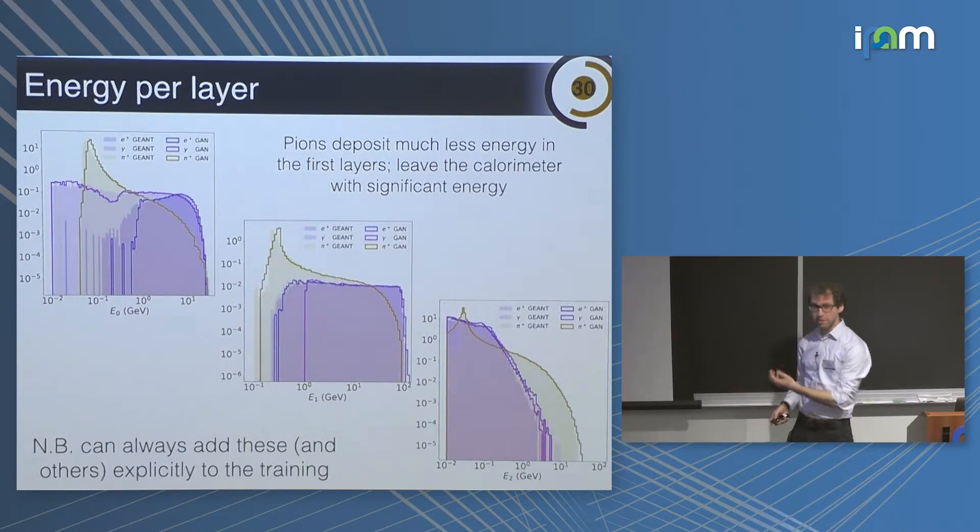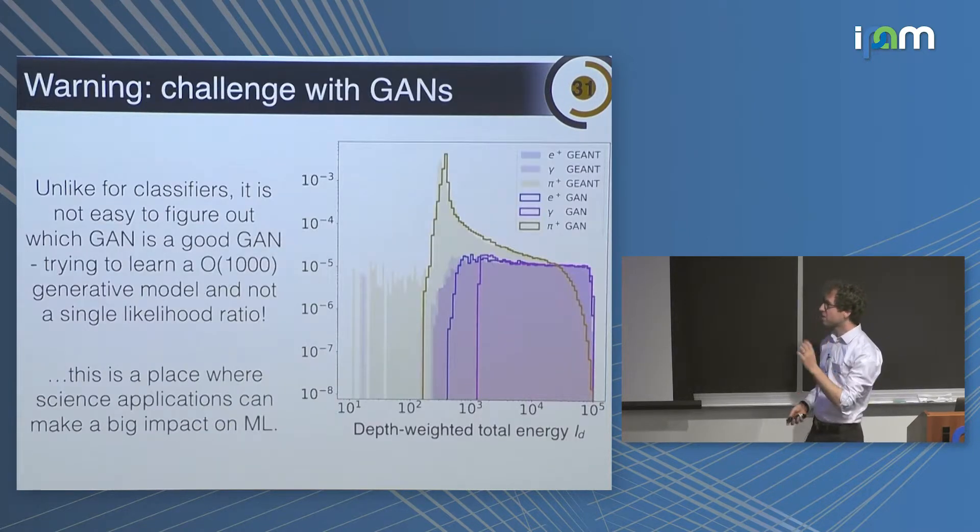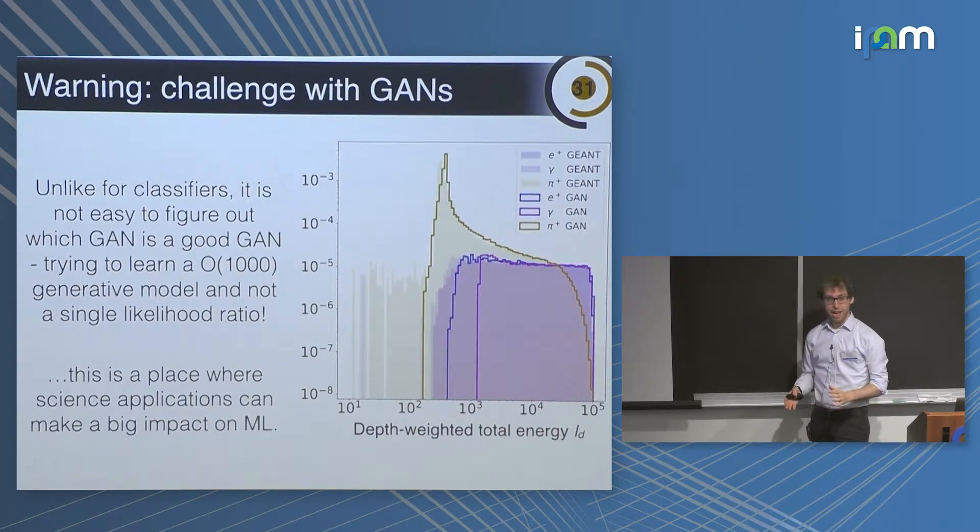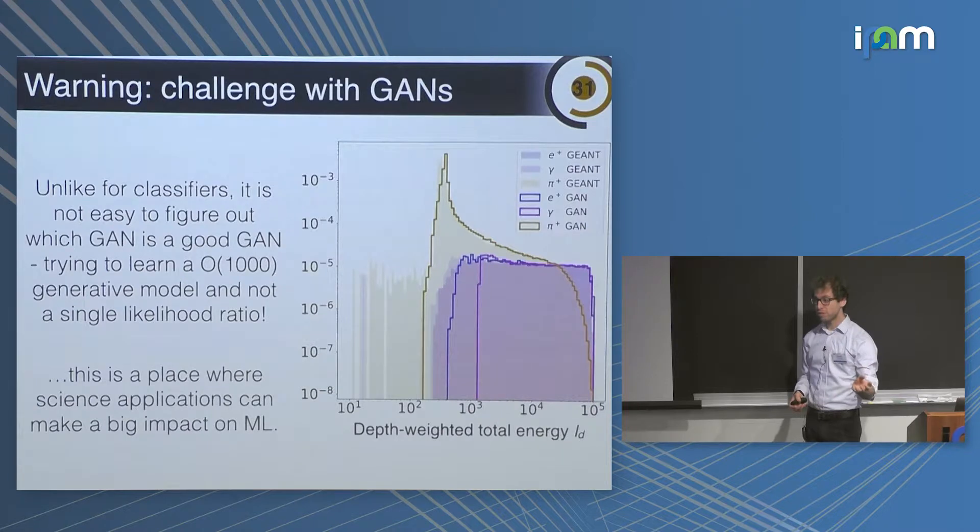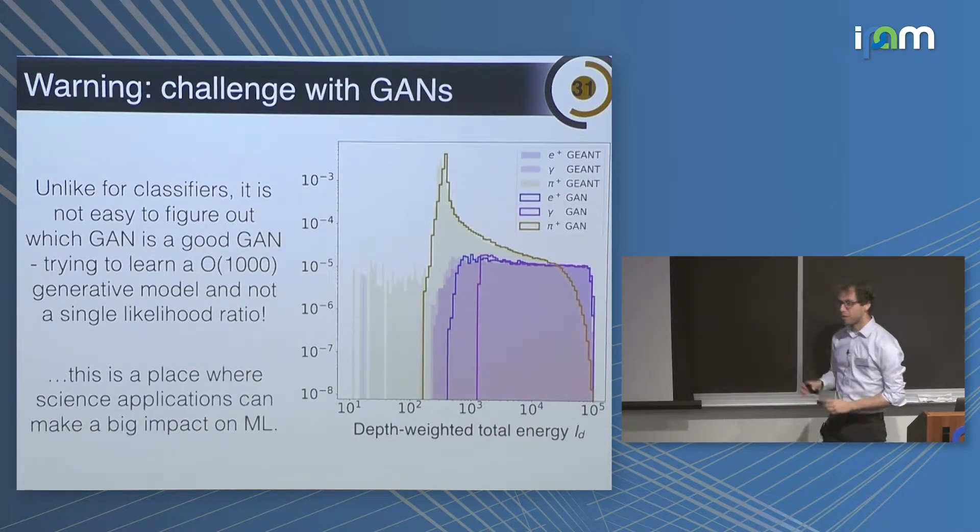In fact, this is in my mind the key challenge: if I give you a GAN, how do you know it's a good GAN? If you have a classifier, you can monitor a single function. Basically you look at the AUC or the accuracy. You know that your classifier should be learning something monotonic with a likelihood ratio. So there's only a one dimensional function to learn. Here, we're learning an order thousand dimensional function. And I have no good way of looking at a thousand dimensions and deciding if it's good or not. So this is a key challenge. I think a place where science applications can make a big impact. Because industrial applications, there's a lot of it looks good or not. And here, that's just not acceptable.